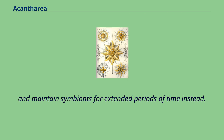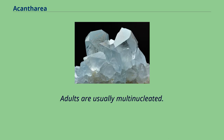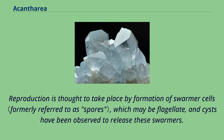In the hypothetical life cycle scenario for symbiotic and cyst-forming acantharia, adults are usually multinucleated. Earlier diverging clades are able to shed their spines and form cysts, which are often referred to as reproductive cysts. Reproduction is thought to take place by formation of swarmer cells, which may be flagellate, and cysts have been observed to release these swarmers.